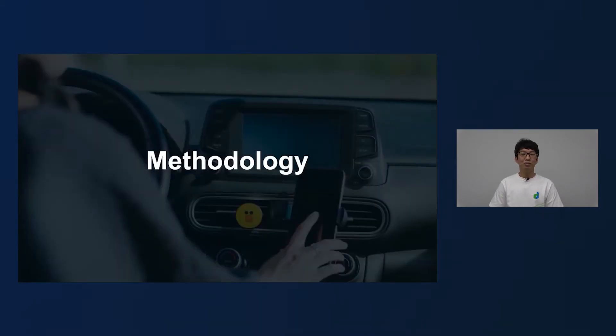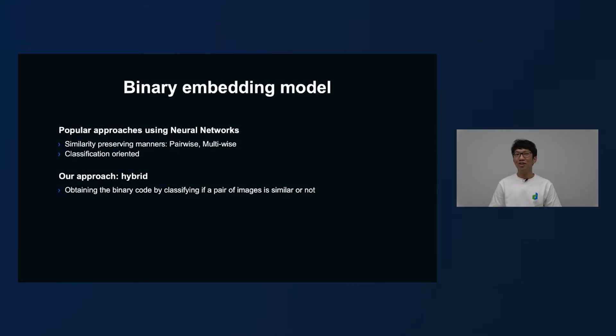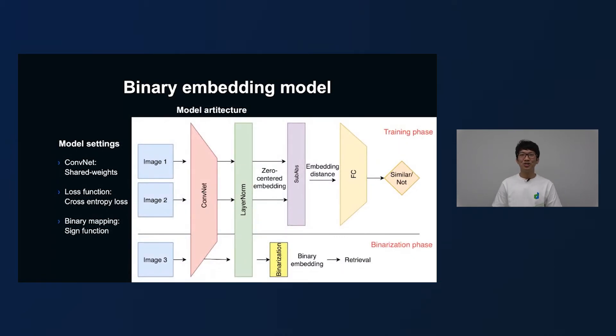I move to the methodology part. So first of the methodology is about binary embedding model. There are many approaches for binary code learning. I just list two popular approaches using neural networks. The first approach, the binary code is learned through similarity preserving manner. The model using this approach tries to minimize the distance between two similar images and maximize the distance between two dissimilar images. The second approach is classification oriented. In this approach, the binary code is learned through a classification model. The model using this approach tries to classify the objects of interest and at the same time learning the image representation. Our approach is somewhat hybrid. We try to classify if a pair of images is similar or not, and at the same time learning the image representation.